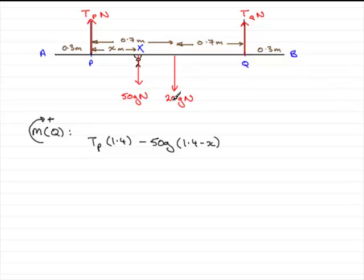Next, we consider the weight of the beam. And again, this will want to turn about Q in an anticlockwise sense. So we've got minus 20G multiplied by this distance here, which is clearly 0.7. So 0.7.